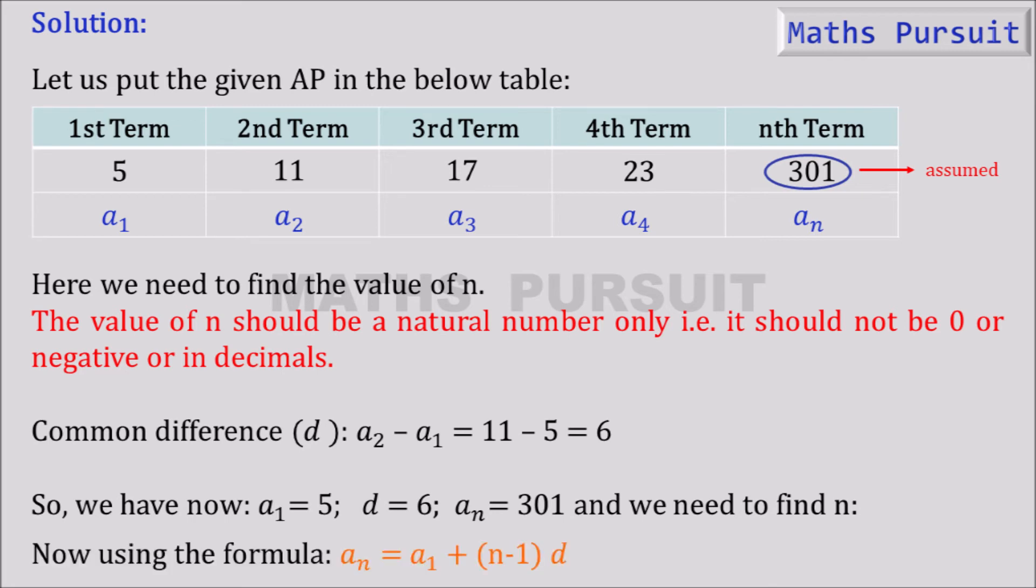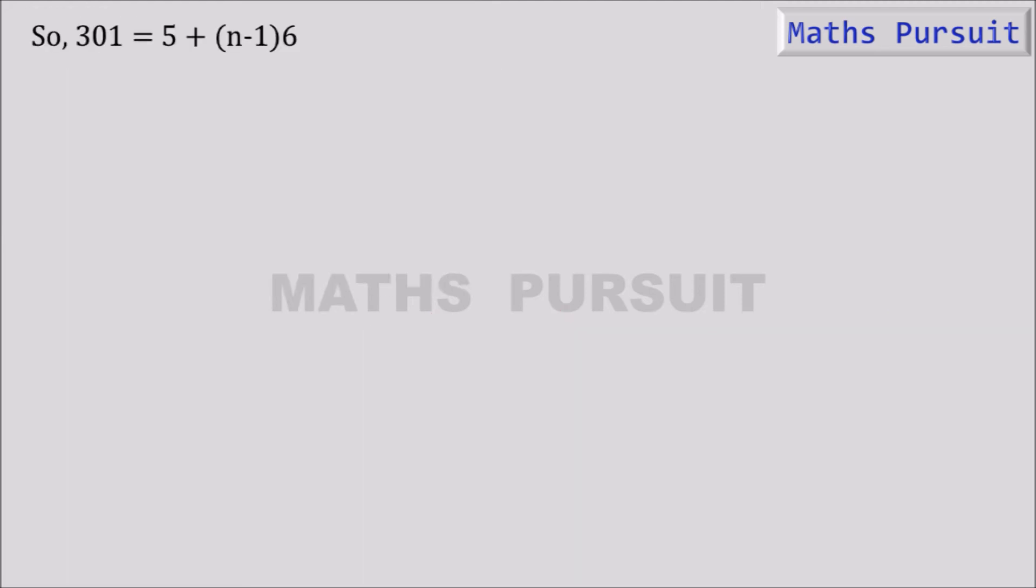Now using the formula an is equal to a1 plus n minus 1 into d. So 301 is equal to 5 plus n minus 1 into 6.